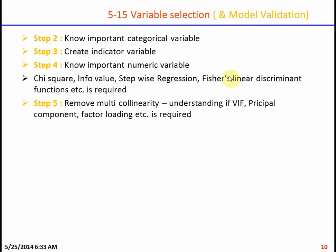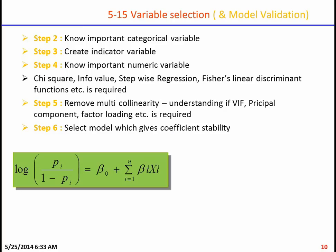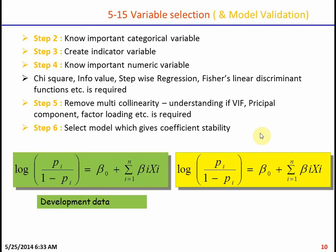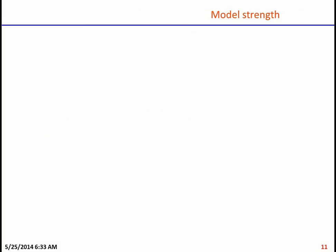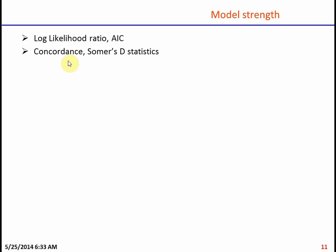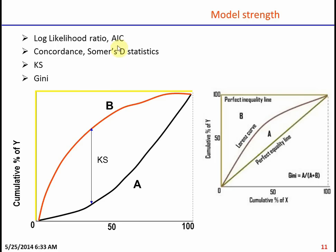The next critical step is model validation. You select variables that give good coefficient stability — developing a model on development data and then applying the same variables and treatment to out-of-time validation data. If the coefficients have the same or similar values, you have coefficient stability. Then you assess the strength of the model using log likelihood ratio, AIC, concordance, Somers D, and the Gini statistic.